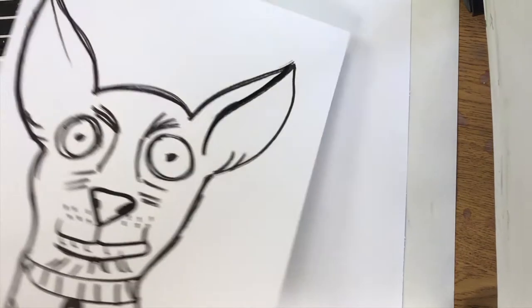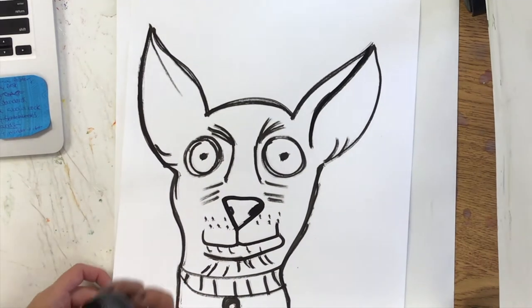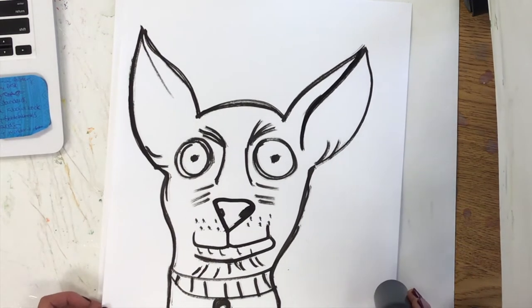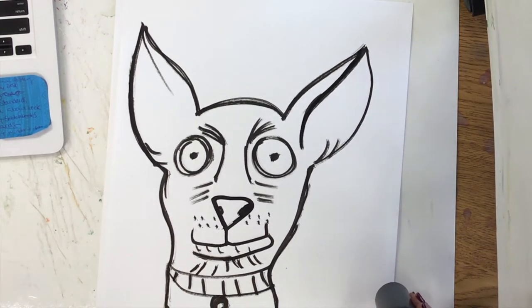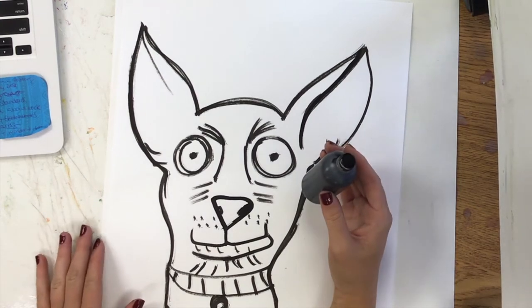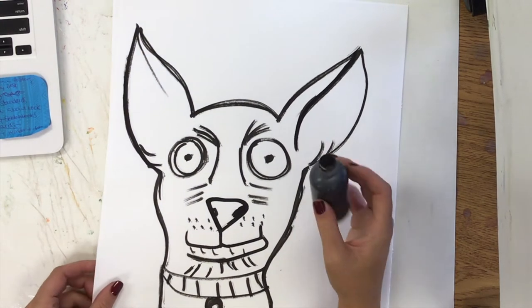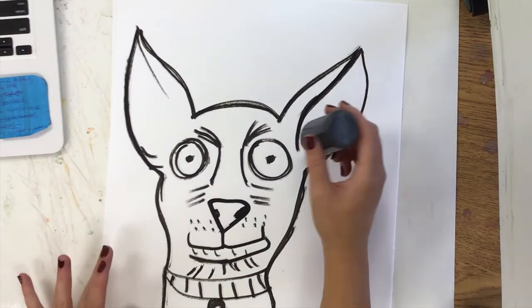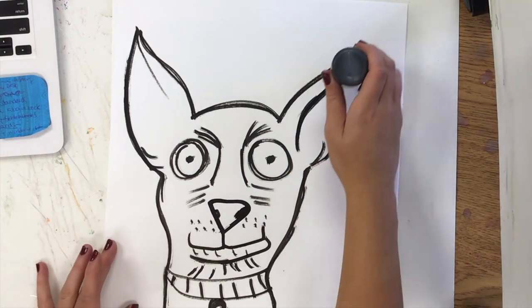You are going to be drawing a little chihuahua dog with big ears using a paint marker. When you're using the paint marker, make sure that you're not pushing super hard, just gently like you would a normal marker to make nice dark outlines of your dog.